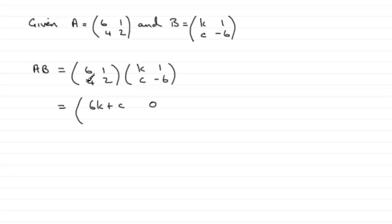Bottom row, first column: 4 times K plus 2 times C, so that's 4K plus 2C.